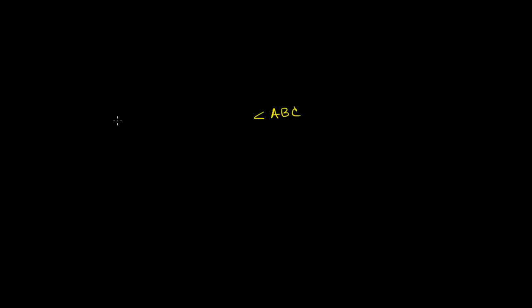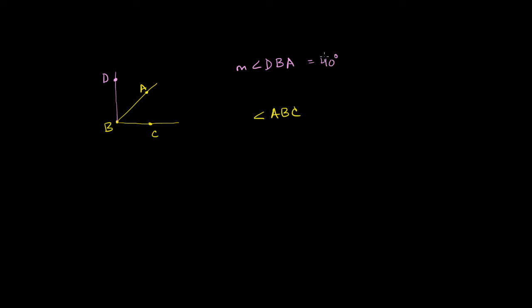Let's say I have an angle ABC. Its vertex is going to be at B. Maybe A sits right over here and C sits right over there. And let's say that we have another angle called DBA — I want to have the vertex once again at B. So this right over here is our point D. Let's say that we know that the measure of angle DBA is equal to 40 degrees, and the measure of angle ABC is equal to 50 degrees.